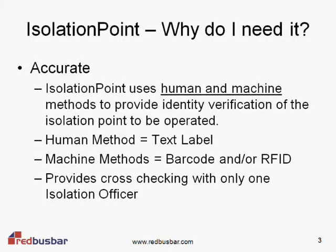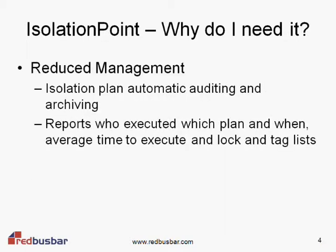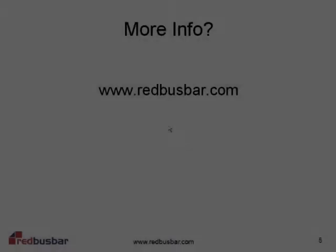In summary, Isolation Point provides safer isolations than paper-based isolation procedures. It uses human and machine methods to provide identity verification of the isolation point to be operated. A text label and a barcode or RFID tag per point is all that is required. In essence, Isolation Point provides identity cross-checking with only one isolation officer. Isolation Point requires less management effort, yet it provides more information about completed isolations. Isolation plans are automatically audited and archived. In addition, reports of who executed which isolation plan and when, average time to execute, and lock and tag lists are available at the click of a mouse.